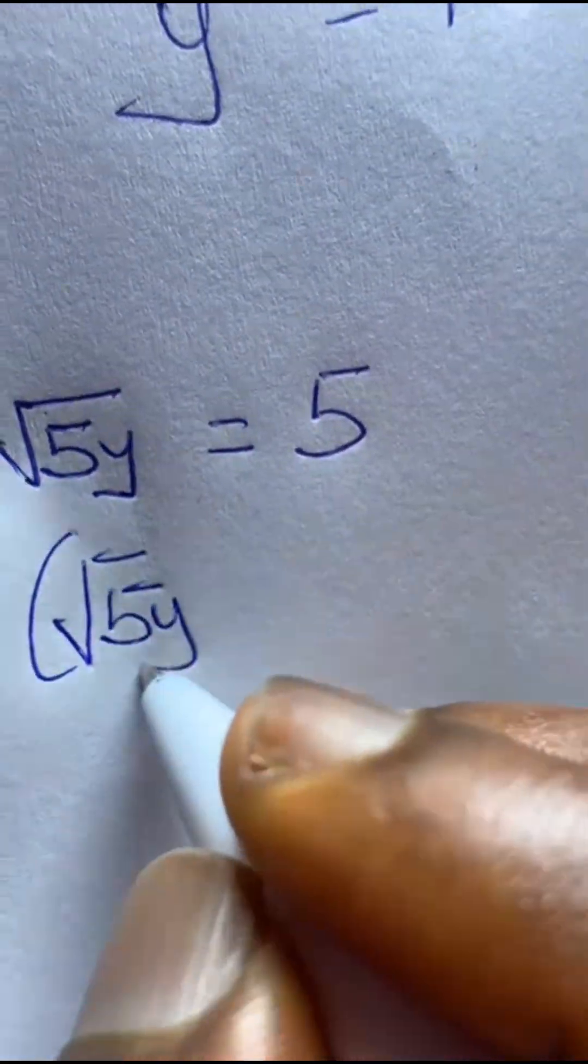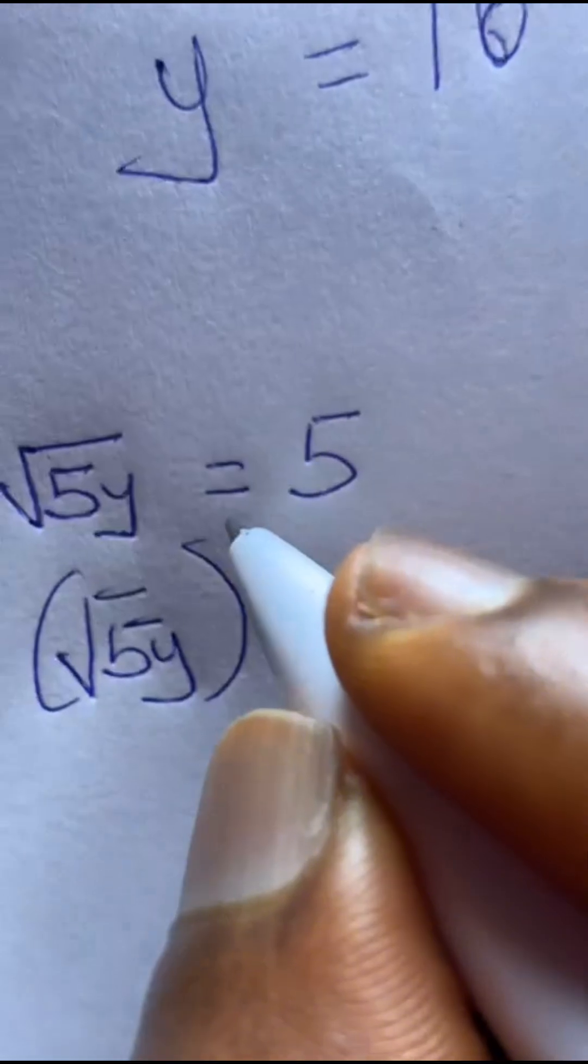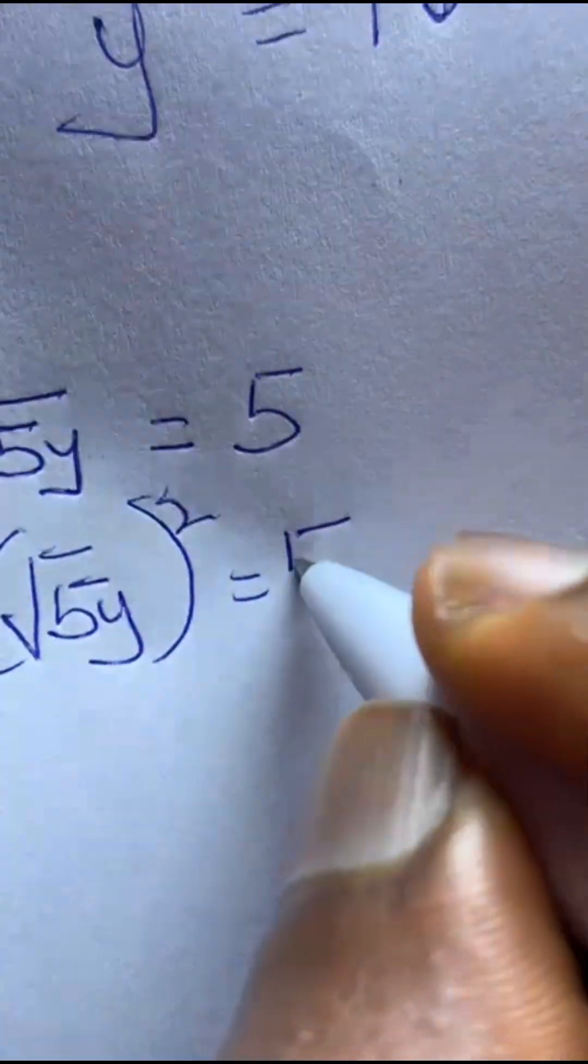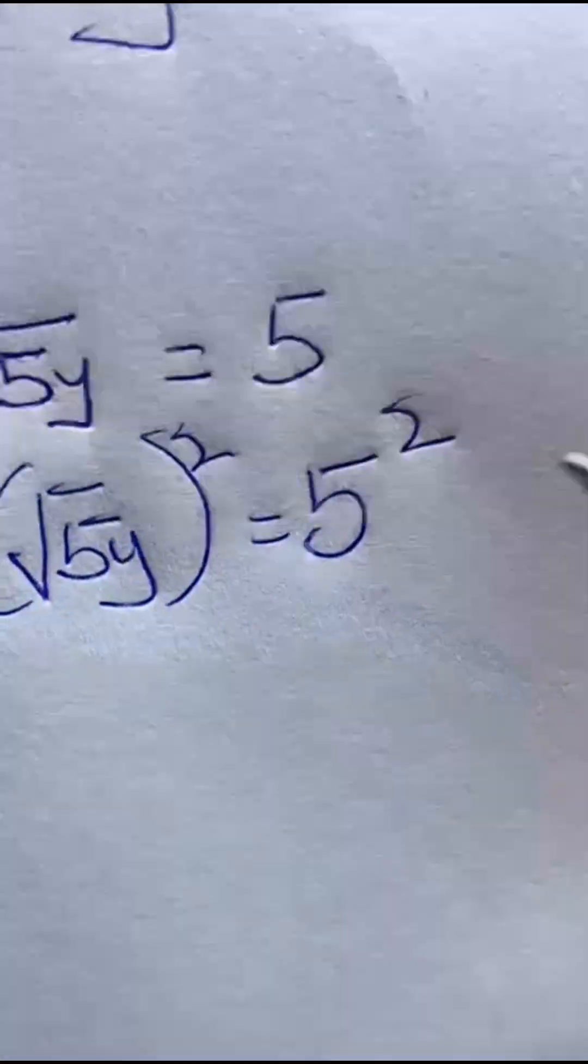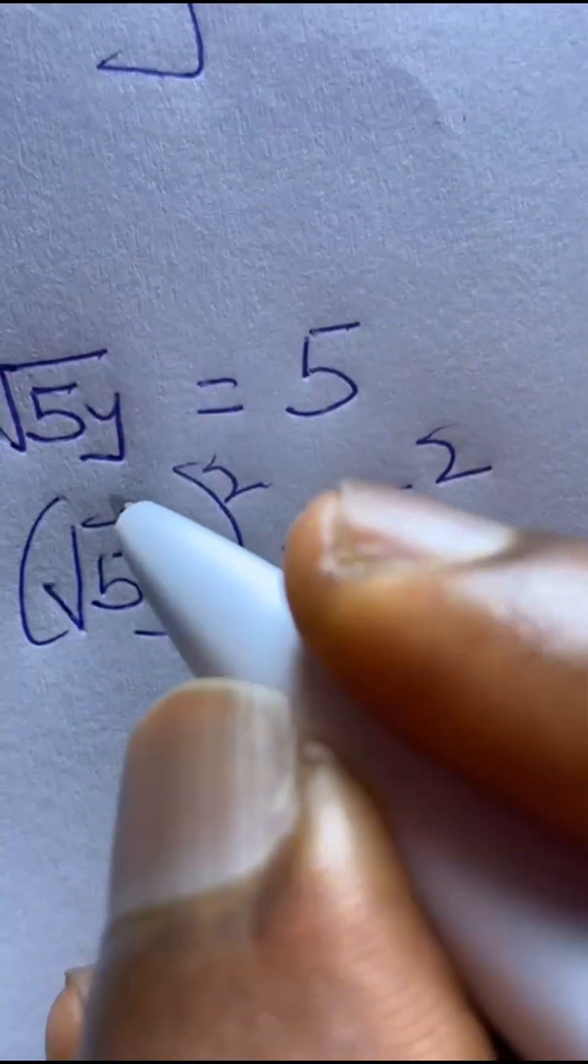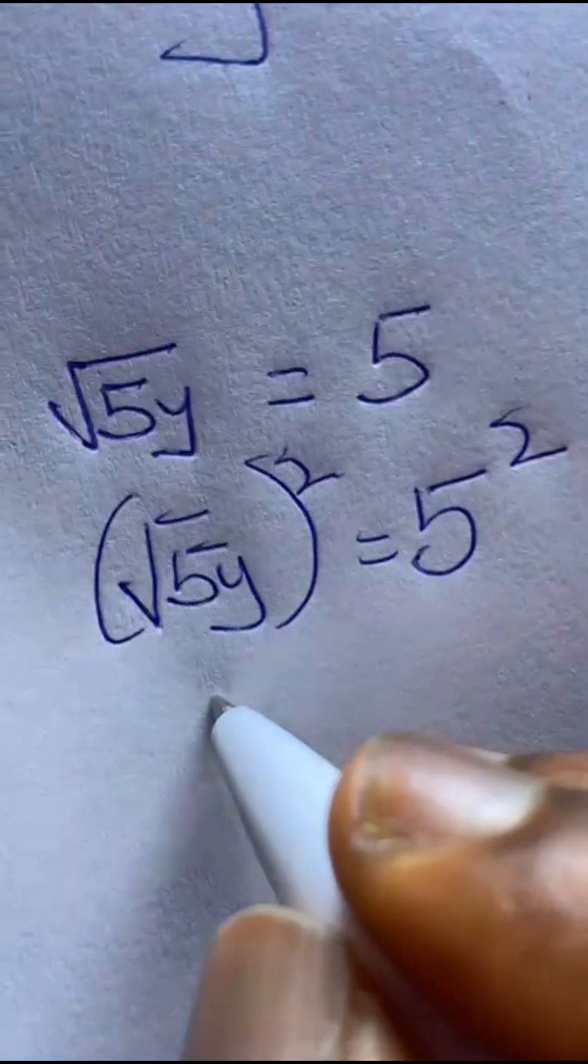I got you. So you square this side. You need to square the other side too. So you got this. Now what you do, this square takes away the square root. So I'm left with 5y.